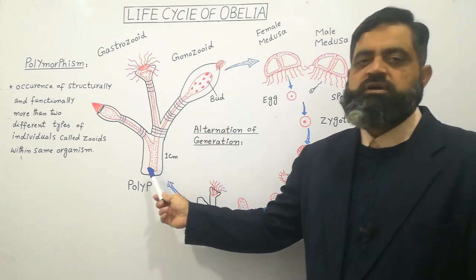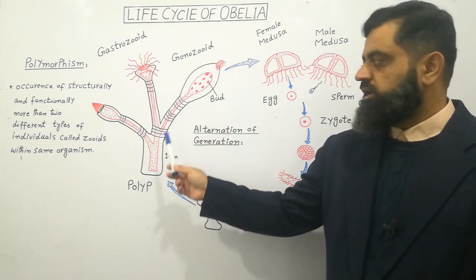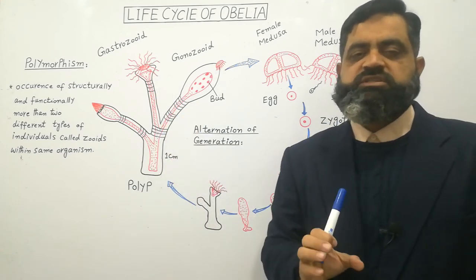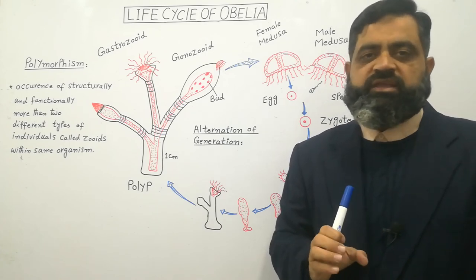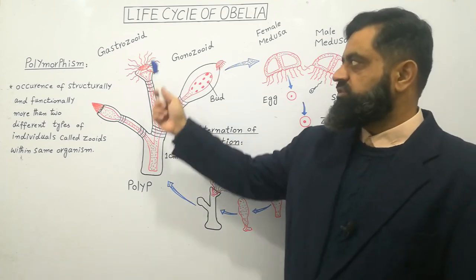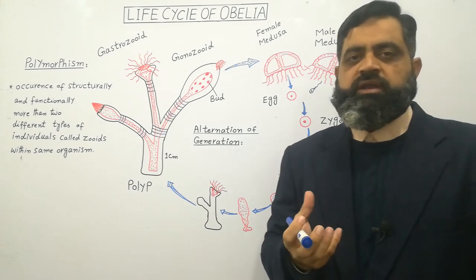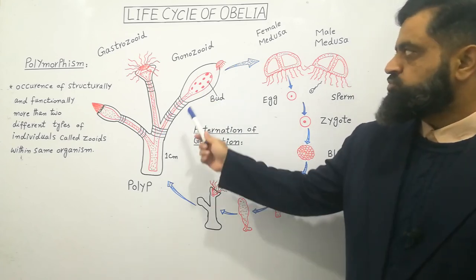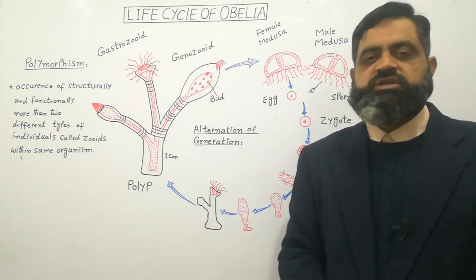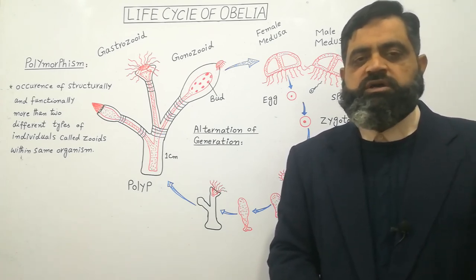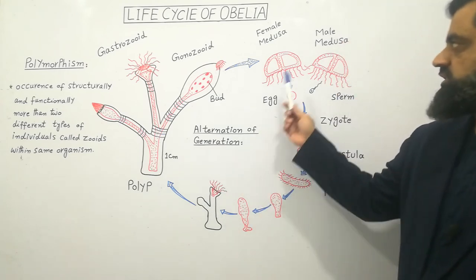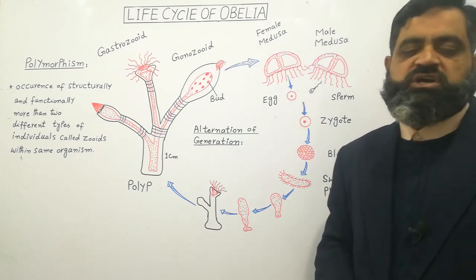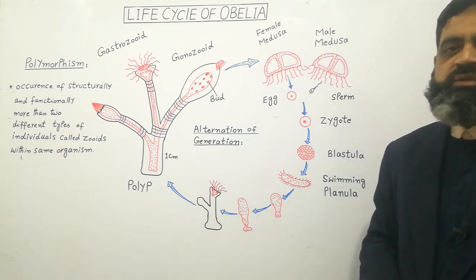Obelia is a colonial cnidarian which has two types of zooids. Number one, Gastrozoids — these are animal-like zooids capable of feeding. They have tentacles on their top surface and are involved in capturing prey in the water and feeding the whole colony. The other zooid is Gonozoid, which is specialized in budding — a method of asexual reproduction. There is also another body form, known as Medusa, which is free-swimming, umbrella-like, and reproduces sexually.